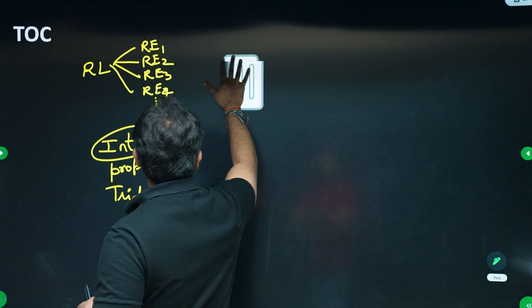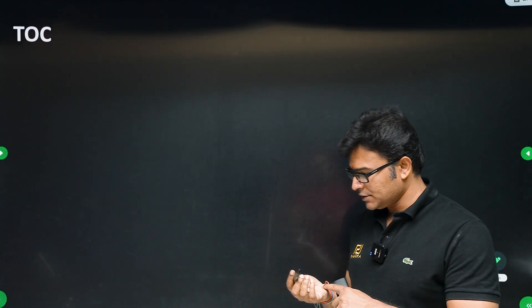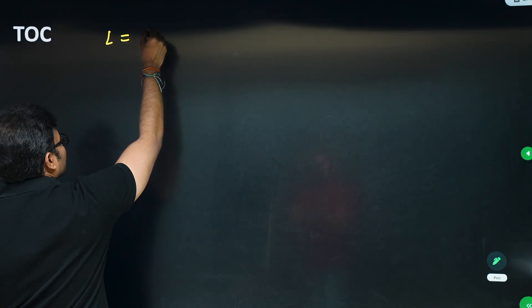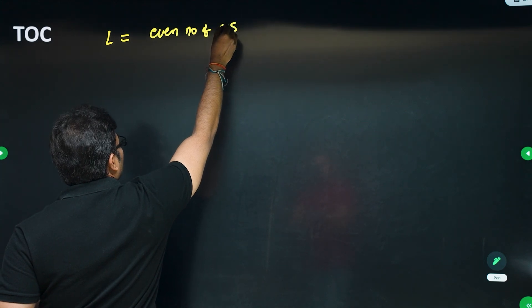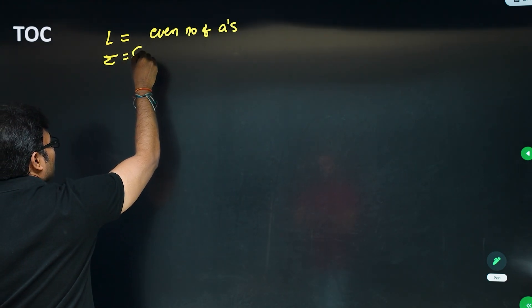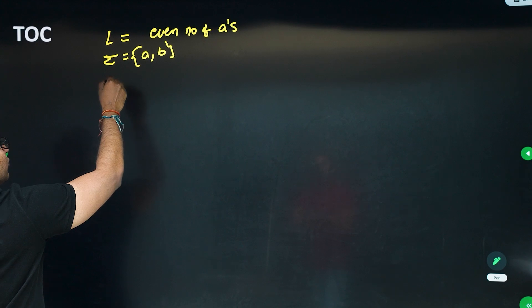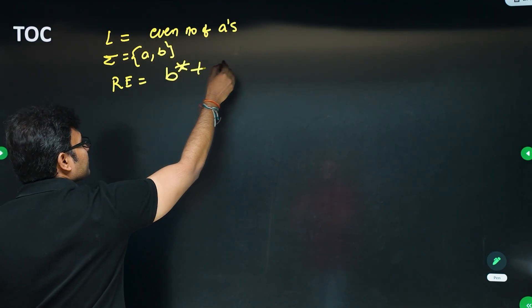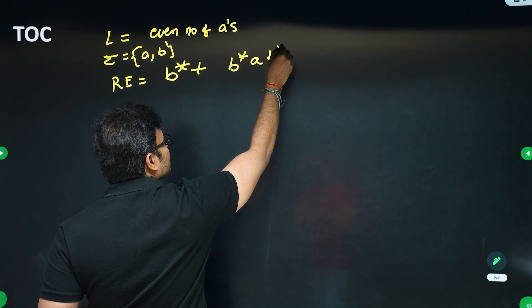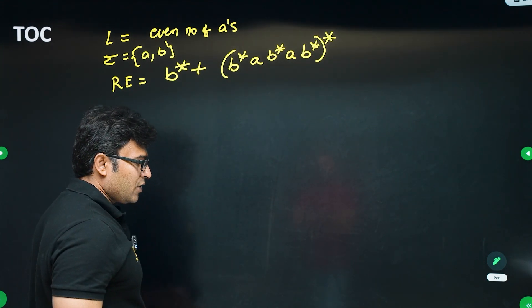Today I will take one example and show you how to find out whether a regular expression is correct for a given language. The language is: the set of all strings over {a, b} containing an even number of a's. The known regular expression is b* plus (b*ab*ab*)* — zero a's is also an even number.